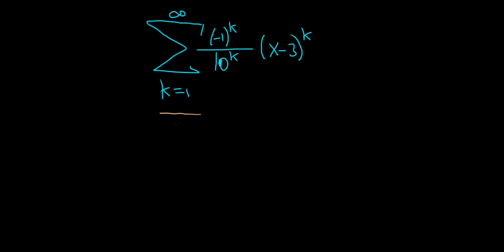We can write this as follows. The infinite sum as k runs from 1 to infinity. And notice everything is to the kth power. So what you can do is you can write it like this: negative 1 tenth, x minus 3, and then just raise everything to the kth power. Properties of exponents allow us to do that.